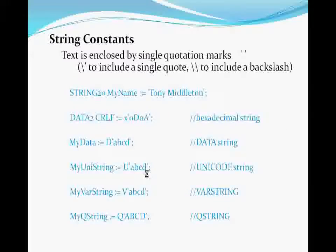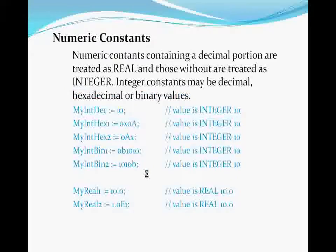String constants in ECL are enclosed in single quote characters. Integer constants may be represented five ways: decimal, two forms of hexadecimal, and two forms of binary. Floating point constants always have a fractional portion, even if that fractional portion is zero. You may also use scientific notation to define a floating point constant.